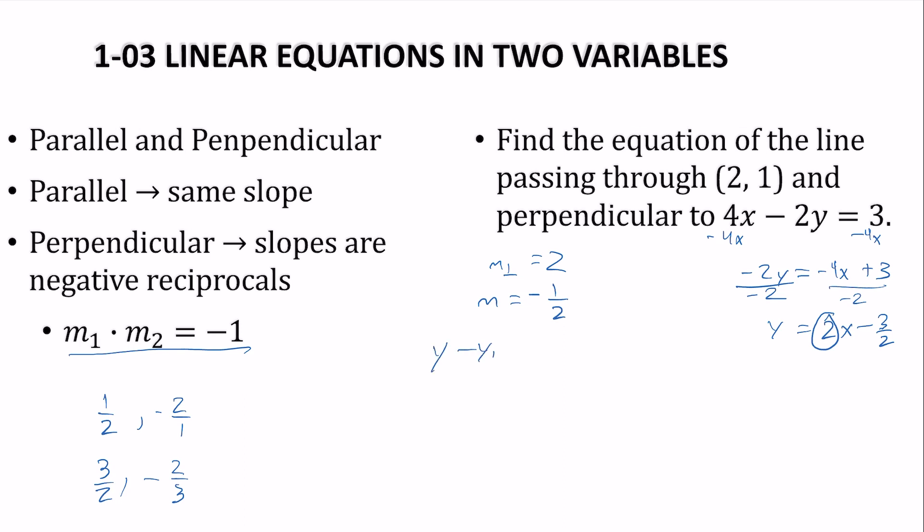So then I can use my point-slope form. My point is x1, y1, so y1 is 1. Slope is negative 1/2. x1 is 2. Distribute the slope. It will become plus 1. And then add the 1. And there is the equation of the line perpendicular to the given line.